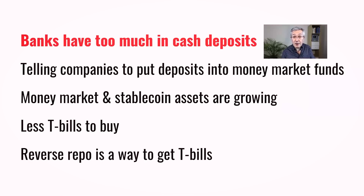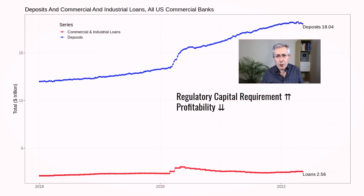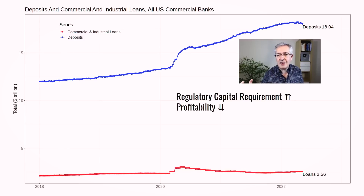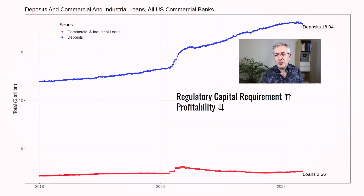The story of why reverse repo has spiked has five parts, and the first part is about banks having too much in deposits. You might think — why would banks not want deposits? But remember these are commercial banks, and deposits form the liability side of their balance sheet. They have to pay out money to customers who've made those deposits, so from the bank's point of view it's just a cheap form of funding.